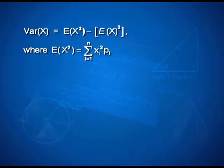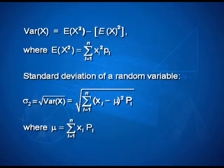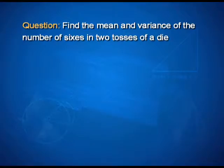Along with this we also have standard deviation, which is nothing but the positive square root of the variance. So you calculate variance and take the positive square root of it. Here is a question for you to follow along, so that these definitions and formulas make more sense. The problem states: find the mean and variance of the number of sixes in two tosses of a die.